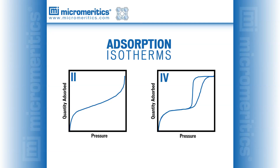This slide shows isotherms Type II and Type IV. These two isotherms are very similar in shape, with the difference being that Type IV exhibits hysteresis between the adsorption and desorption branches of the isotherm. Hysteresis is commonly observed for porous materials and is observed when the shape of the pores causes the adsorption and desorption portions of the isotherm to have a different path. This type of isotherm corresponds to mesoporous materials with pore width ranging between 2 and 50 nanometers. The Type II isotherm does not show any hysteresis and saturation takes place at much higher relative pressure. These adsorption characteristics correspond to non-porous solids or solids having very large pores called macropores, which are larger than 50 nanometers in diameter.